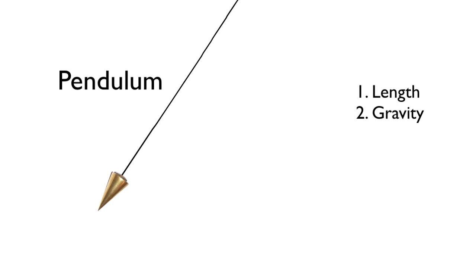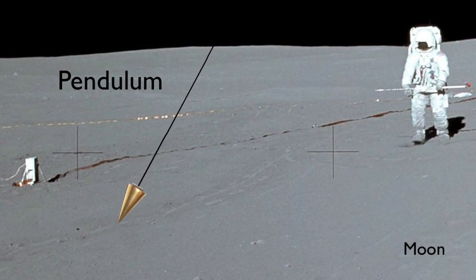It's gravity that's pulling the pendulum downward, so it makes sense that the weaker the force of gravity, the less the acceleration, hence the longer time it takes to swing back and forth.